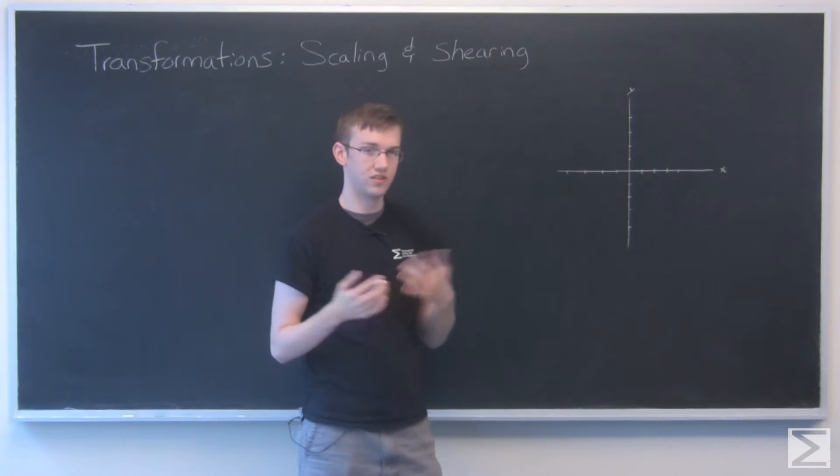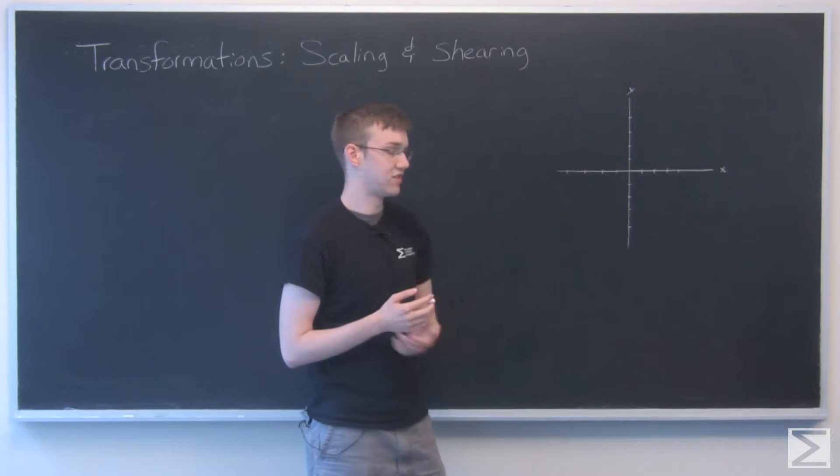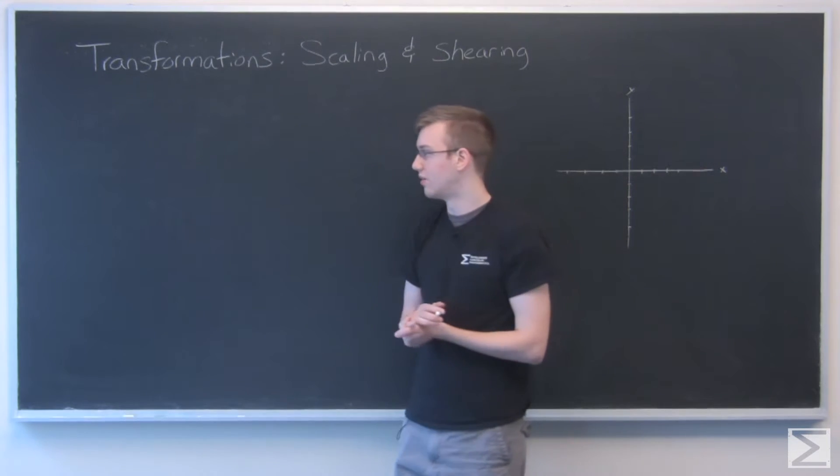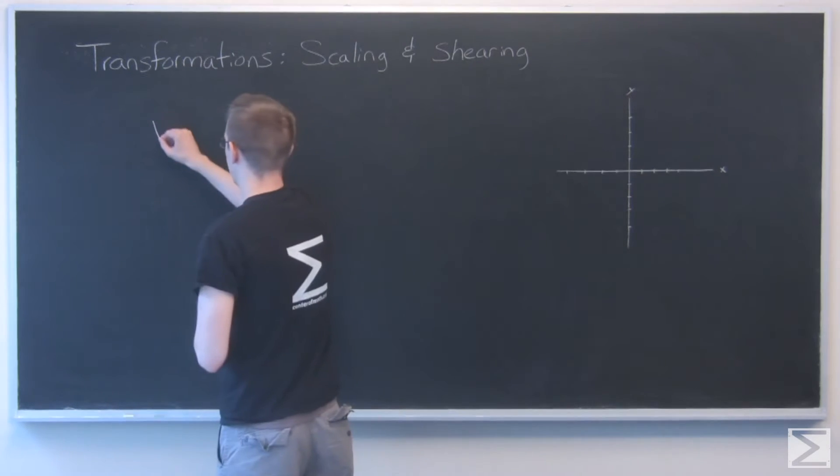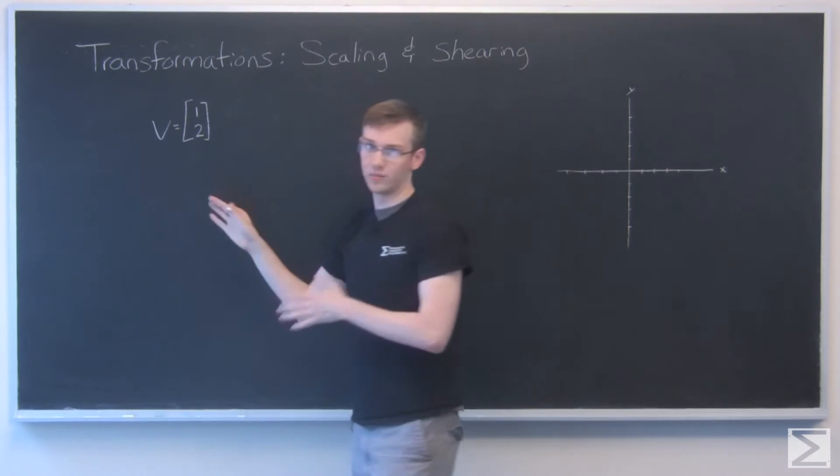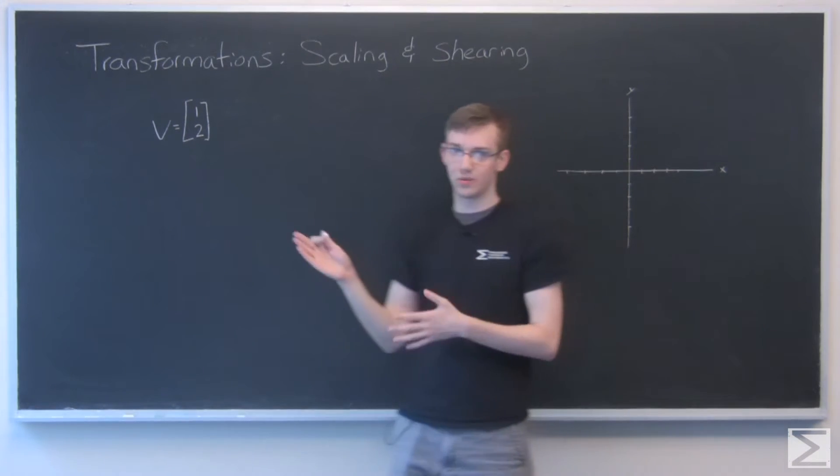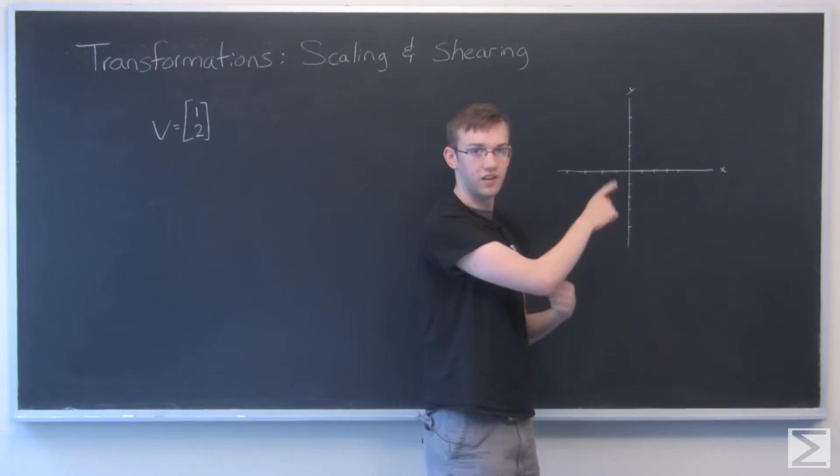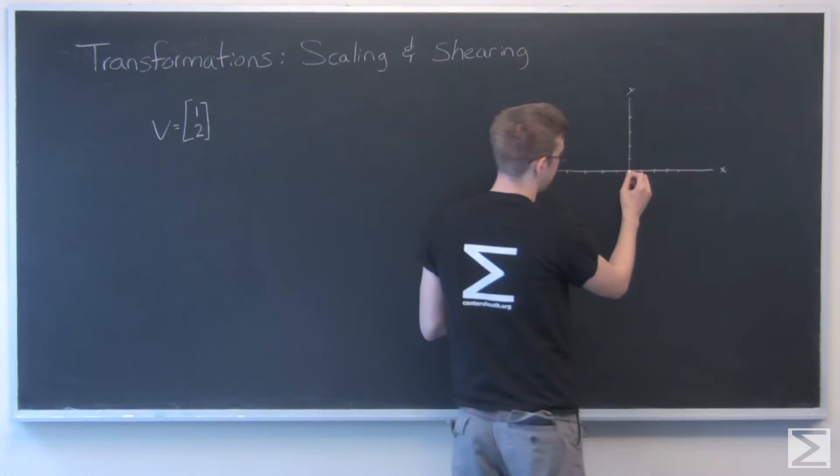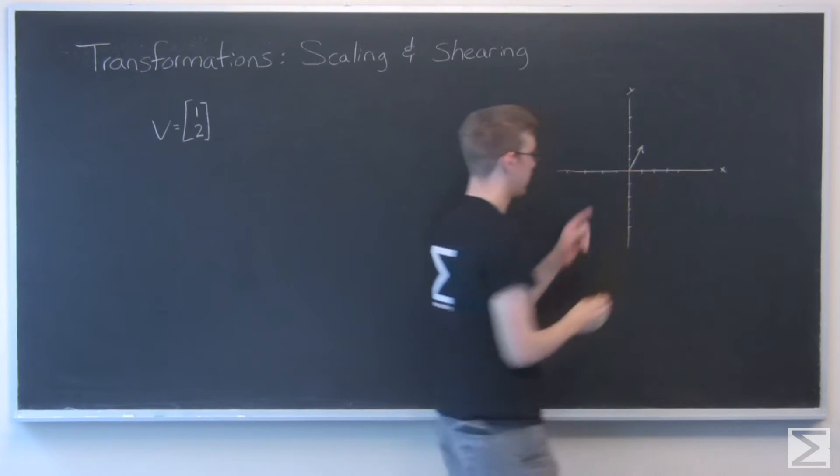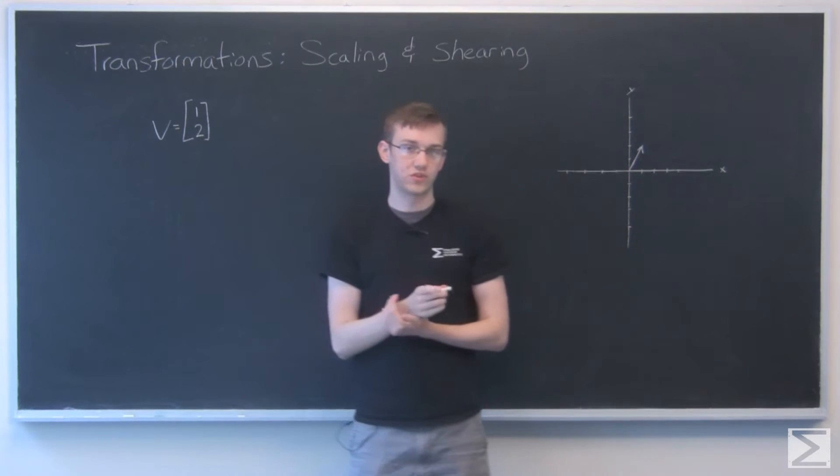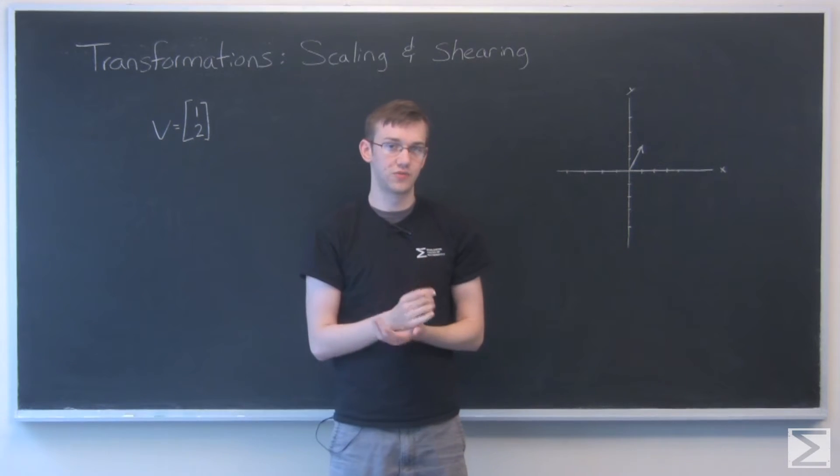So we're going to think about this in two dimensions because that's the easiest to visualize on a graph like this, and I'm going to be working with a vector, just 1, 2. So that'll be our model for these transformations that we're going to do. I'm going to draw it on this graph right here. So that's 1 in the x direction and 2 in the y direction. So that's our vector. And what a matrix can do to this vector is to transform it in some way.